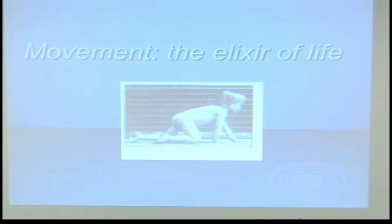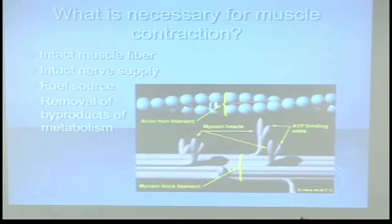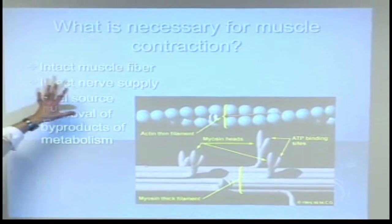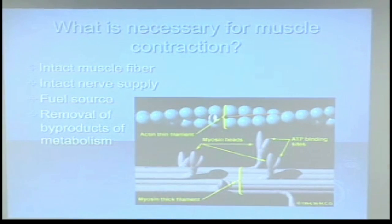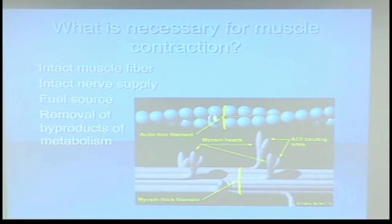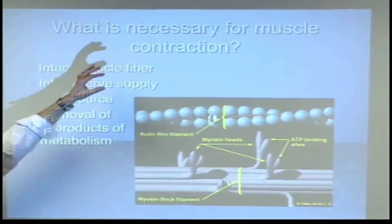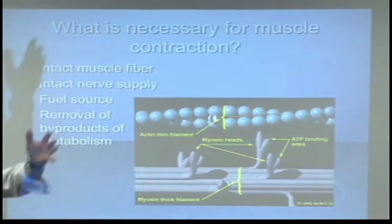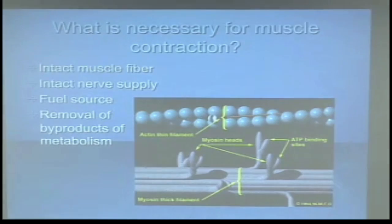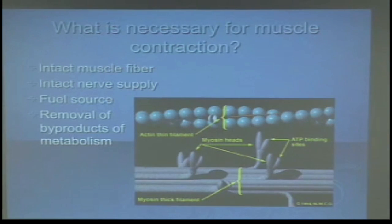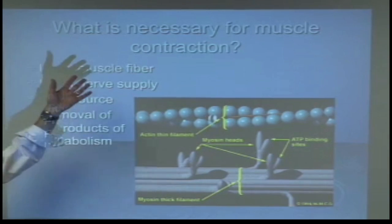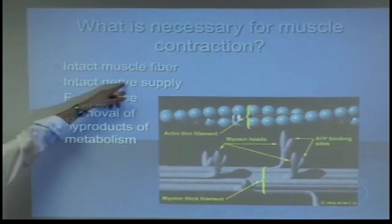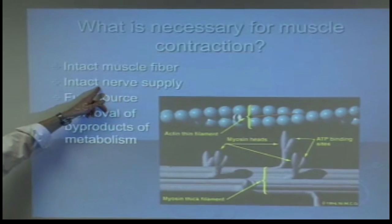Let's talk about movement. What is necessary for a muscle to contract? Getting back to basics — I need an intact muscle fiber. If I've injured it... a patient came in two days ago who completely tore his infraspinatus and supraspinatus in a fall, with all kinds of contusion. He doesn't have an intact muscle fiber, so that function is gone. I also need an intact nerve supply going to it.